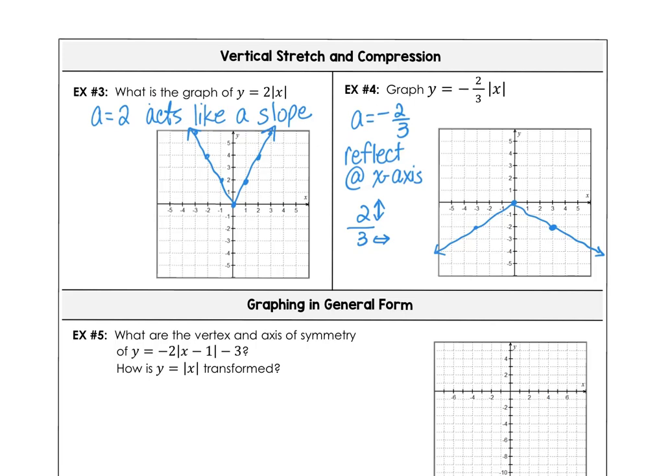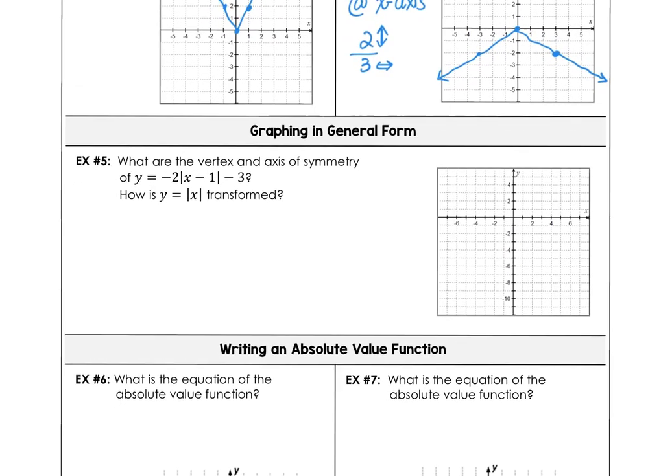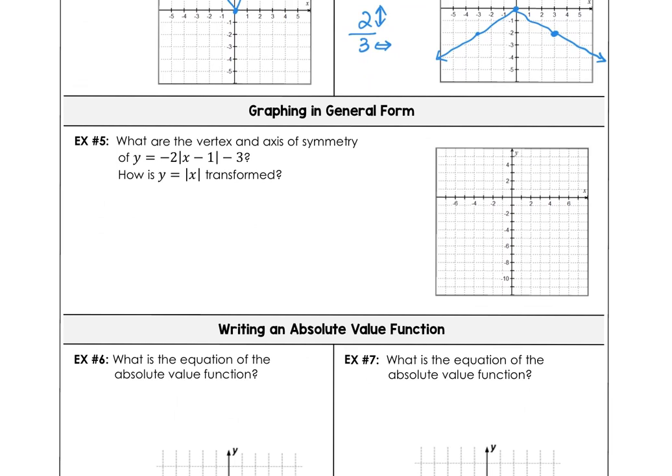Graphing in general form, what are the vertex and axis of symmetry for the graph negative 2 times the absolute value of x minus 1 minus 3, and how is y equals absolute value of x transformed? First, the h, k value is 1, negative 3, so we know where our vertex is.